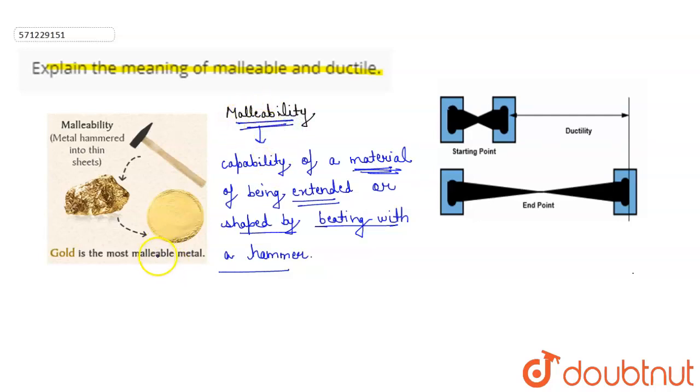Some best examples of malleable materials are gold, copper, aluminum, etc. And as shown in the image, gold is the most malleable material. Coming to ductile,